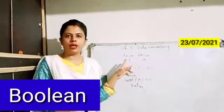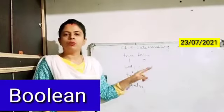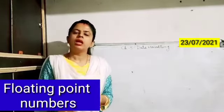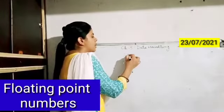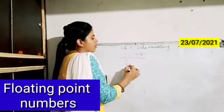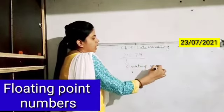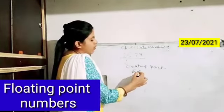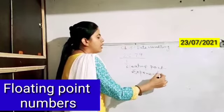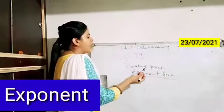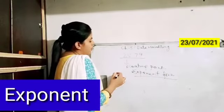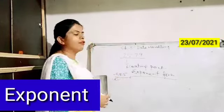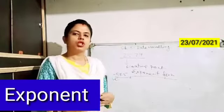Moving forward, we have the floating point. Floating point numbers contain a number along with the fractional form — any number represented in decimal form will be called a floating point number. Under floating point we have one more data type which is the exponent form. Any data represented in the form of, say, 5e5 or -5e5 is called the exponent form of data stored in Python.